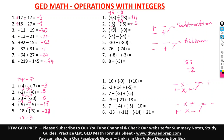Here we have a positive 9. Negative times negative is positive — so that's positive 9 and positive 9. We do addition, giving us positive 18.